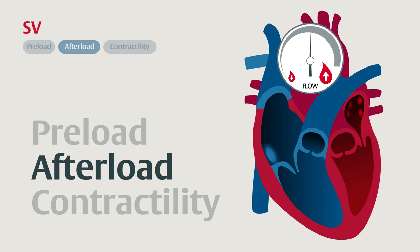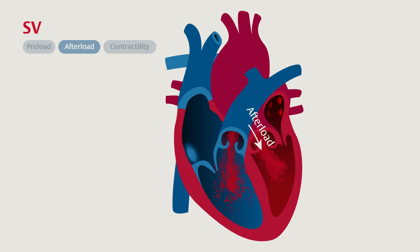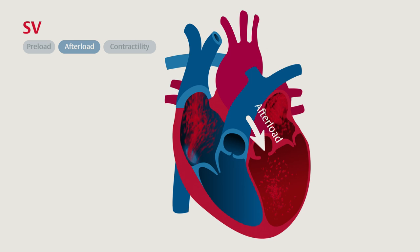Afterload also affects stroke volume. Afterload is the force the ventricle must overcome to open the aortic valve and eject blood. It is determined by resistance in the blood vessels, viscosity of the blood, and the pliability of the aortic valve, among other things. Back to our diagram, starting in the normal state — as we increase the afterload, the left ventricle must work harder to eject blood, and stroke volume could decrease.